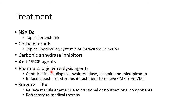Examples of pharmacologic vitriolysis agents include collagenase, dispase, hyaluronidase, plasmin, and microplasmin. These vitriolysis agents induce a posterior vitreous detachment to relieve cystoid macular edema from vitreomacular traction. Surgery can be done when CME is refractory to medical therapy — that is, pars plana vitrectomy can be done to relieve macular edema due to tractional or non-tractional components.